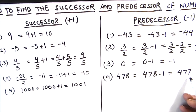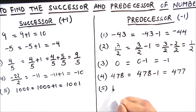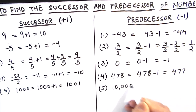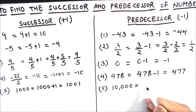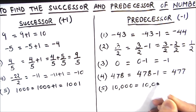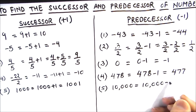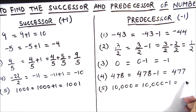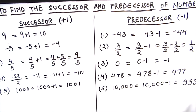Next, the number 478: for finding the predecessor we subtract 1 from 478, giving us 477. The next number is 10,000, and subtracting 1 gives us 9,999.